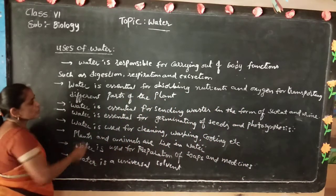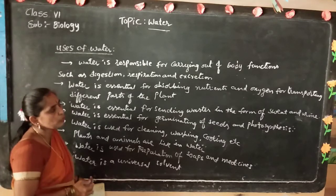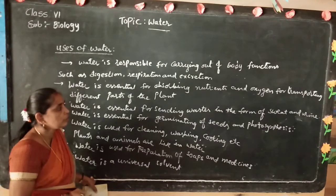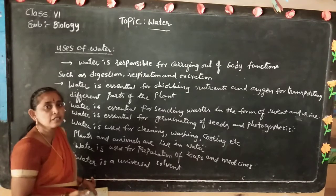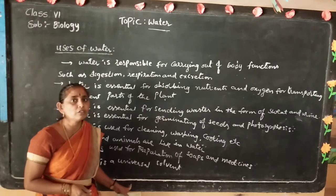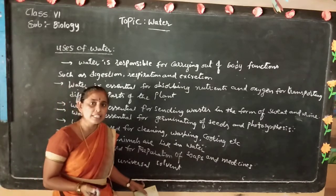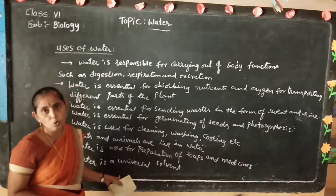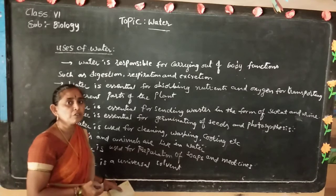Water is essential for sending waste out in the form of sweat and urine. That is why we maintain body temperature. In summer season we are more thirsty and drink more water, because excess water is sent out in the form of sweat and urine, keeping the body cool. In winter season we drink less water.